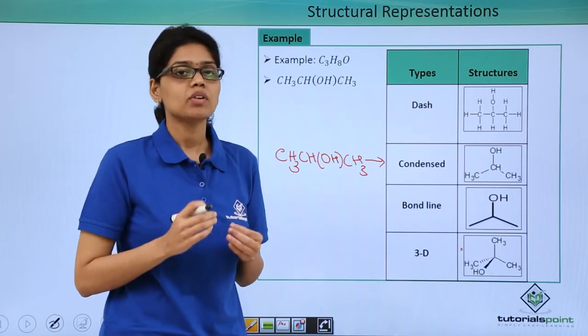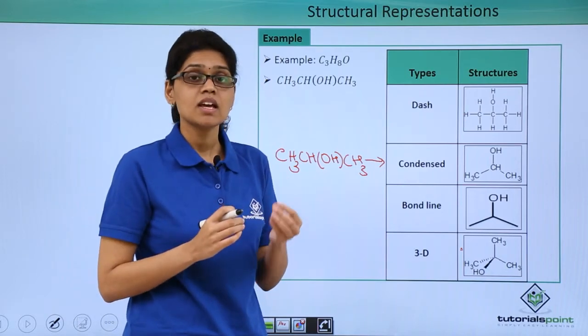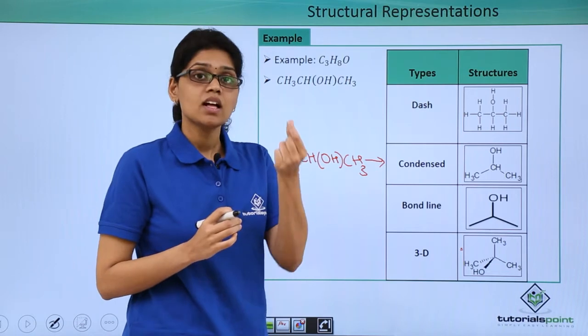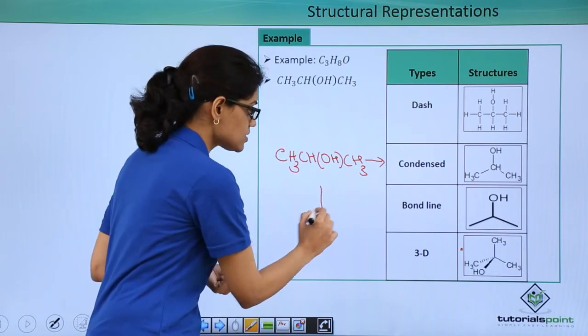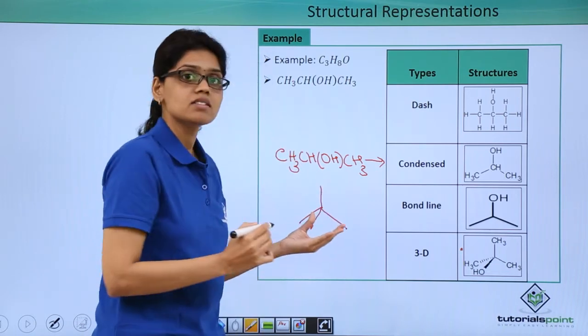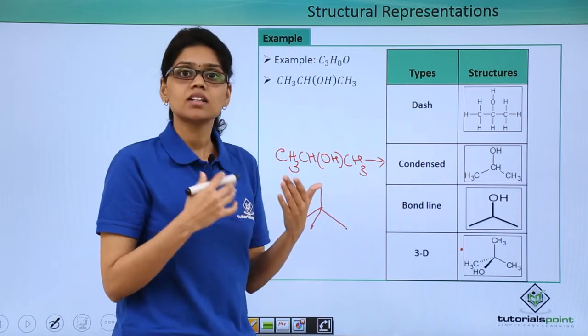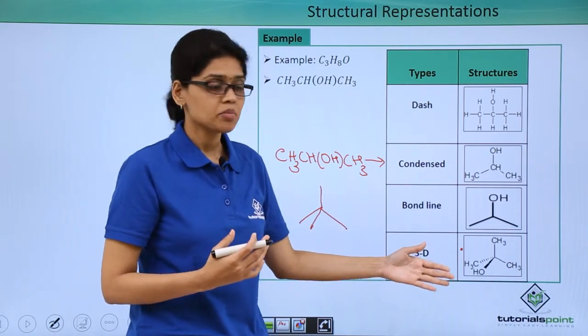Here it is very important to understand because in 3D representation, we are actually representing the tetrahedral structure. That is SP3 tetrahedral structure of a carbon in a 2D plane.